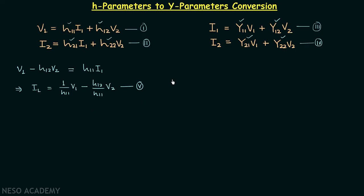Comparing equation 5 with equation 3, we find they have the same form. Now comparing equation 2 with equation 4, we see that equation 4 has variables i2, v1, and v2, whereas equation 2 has variables i2, i1, and v2. This means we need to eliminate i1 and replace it with v2.